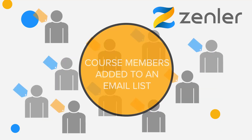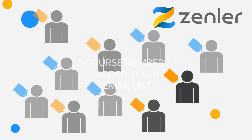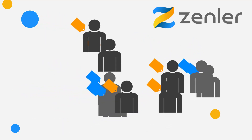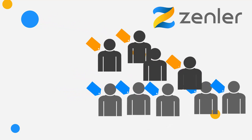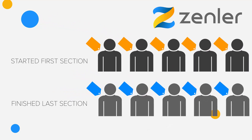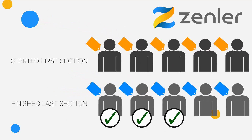An example of this would be 10 students in an email list. Five have started the first section of a course and five had finished the last section of the course. These can be tagged to identify quickly the students who have finished.